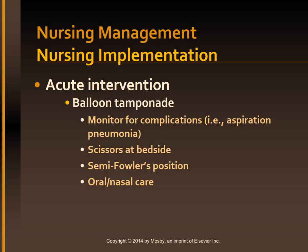Balloon tamponade nursing care includes monitoring for complications such as rupture or erosion of the esophagus, regurgitation and aspiration of gastric contents, and occlusion of the airway by the balloon. If the gastric balloon breaks or is deflated, the esophageal balloon will slip upward, obstructing the airway and causing asphyxiation. If this occurs, cut the tube or deflate the esophageal balloon — keep scissors at the bedside. Minimize regurgitation by oral and pharyngeal suctioning and by keeping the patient in a semi-Fowler's position. The patient is unable to swallow saliva because the inflated esophageal balloon occludes the esophagus; encourage the patient to expectorate and provide an emesis basin and tissues. Frequent oral and nasal care provides relief from the taste of blood and irritation from mouth breathing.